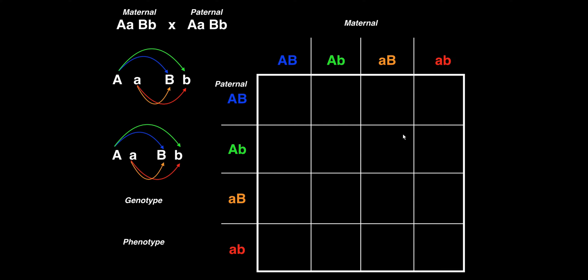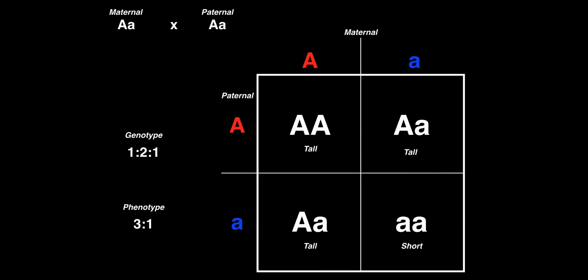For a dihybrid cross, which is what we're doing for two genes, we're going to have a total of 16 cells because we have four columns and four rows, and four times four is 16. Compare that back to the Punnett square, where we only had four cells because it's two columns and two rows.